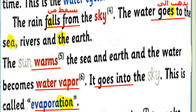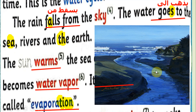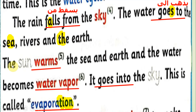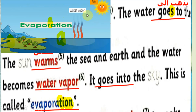The water that falls as rain from the sky goes to the sea, to rivers الأنهار, and to the earth اليابسة. 'The sun warms the sea and earth and the water becomes water vapor' — the sun الشمس warms تسخن the sea and earth, and the water becomes water vapor بخار ماء, as you can see in the picture.